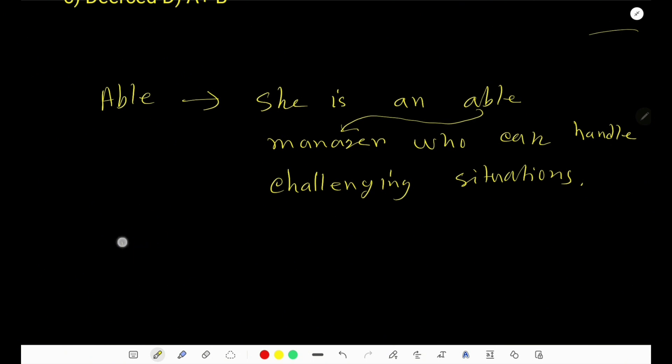Look, the word able is an adjective. Its comparative form is abler. This is comparative form.